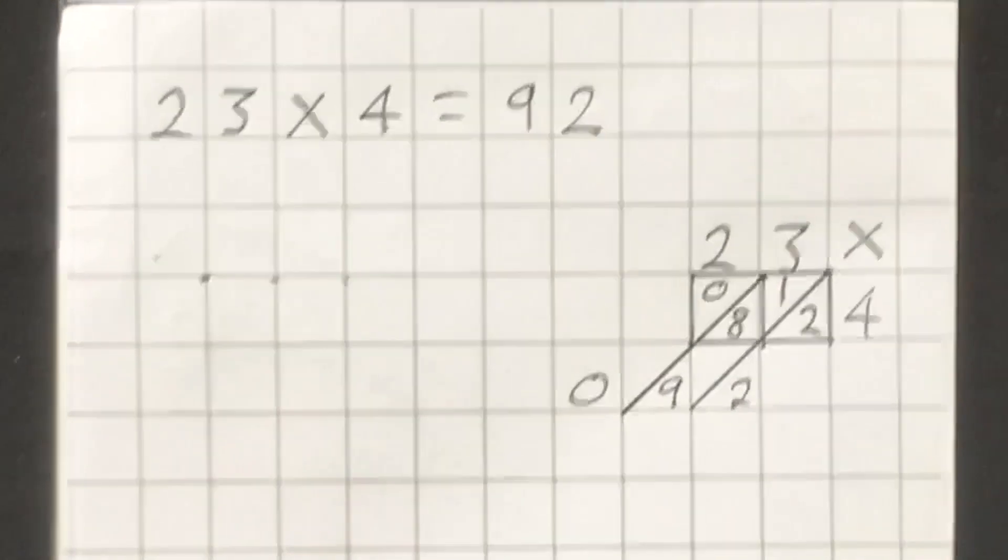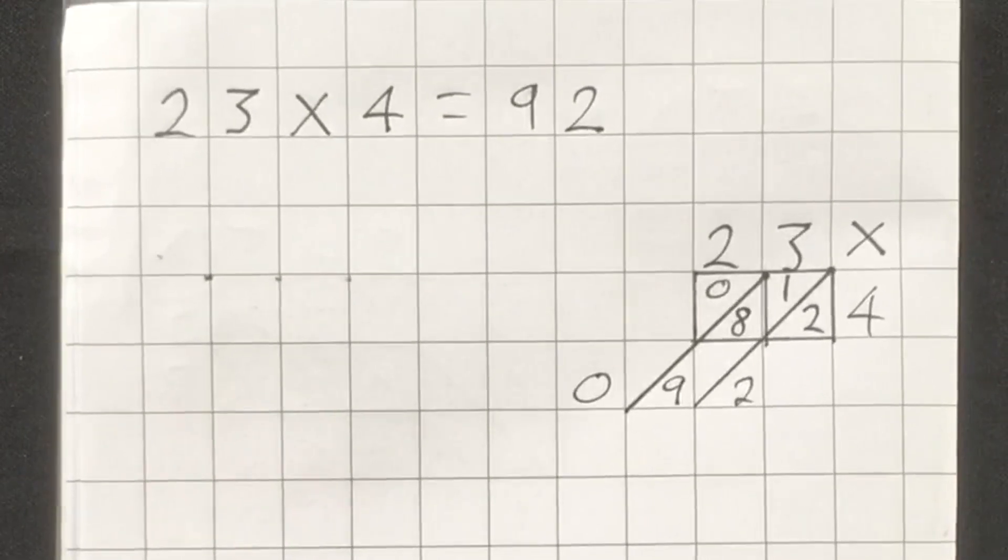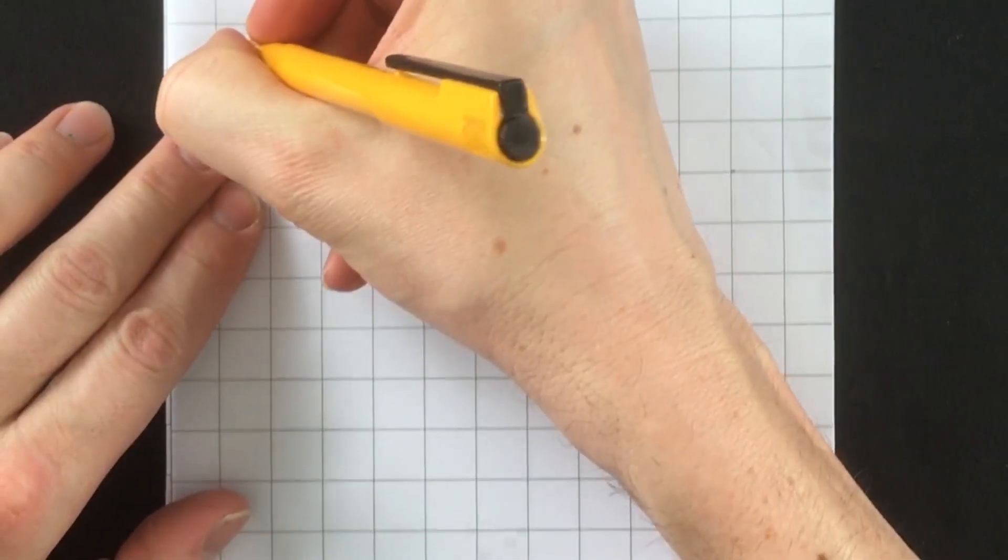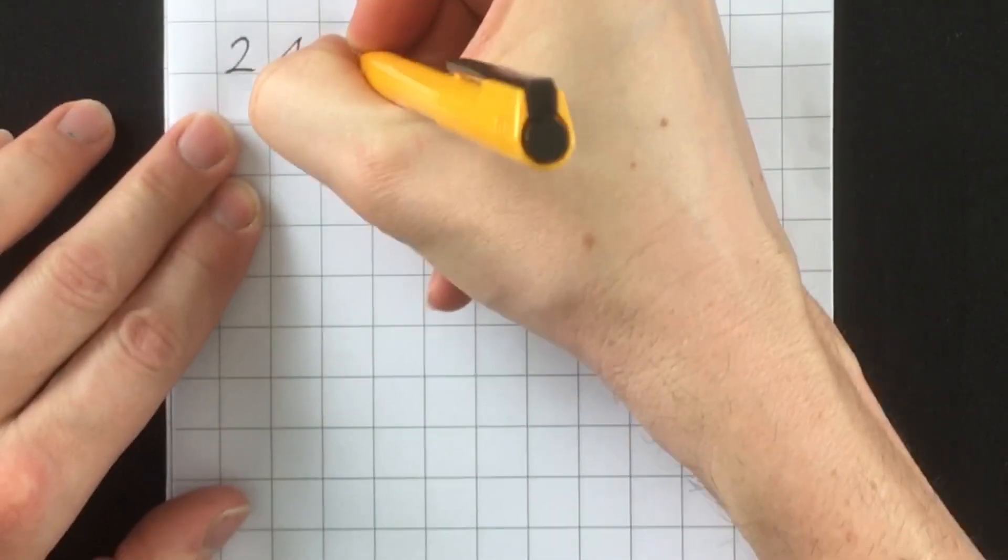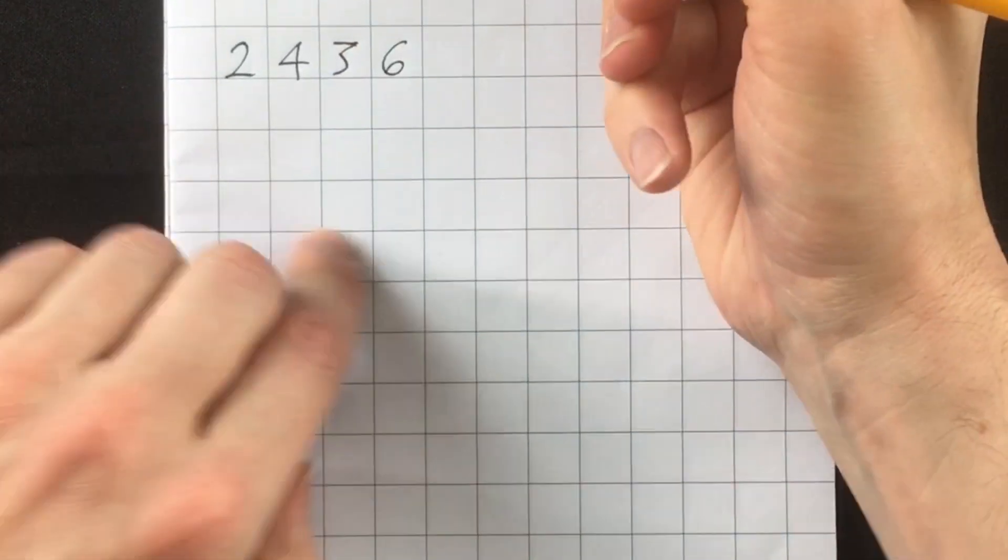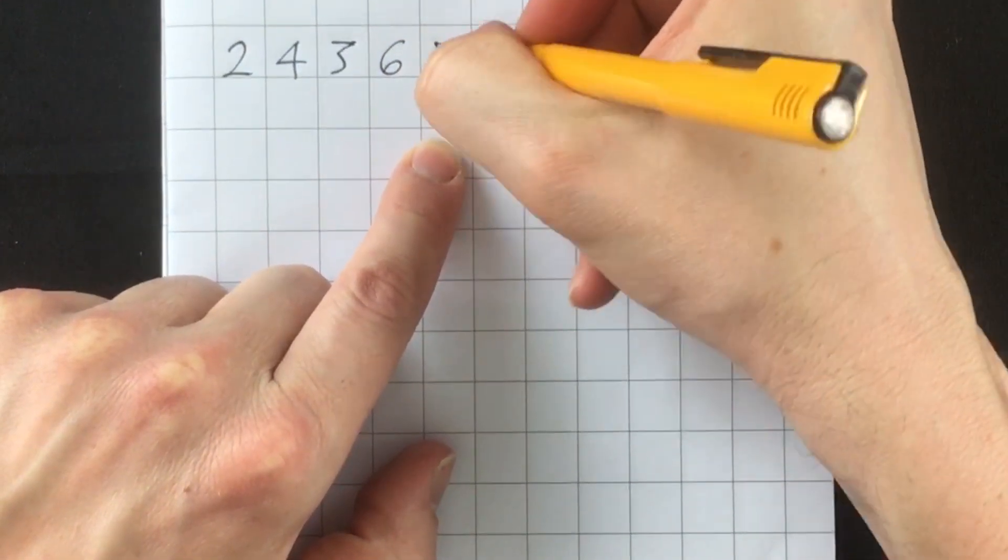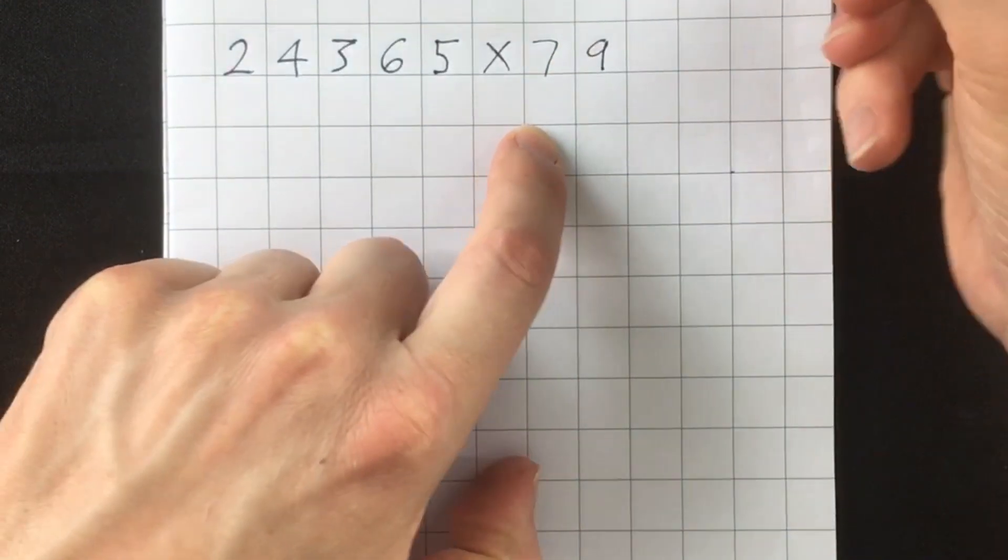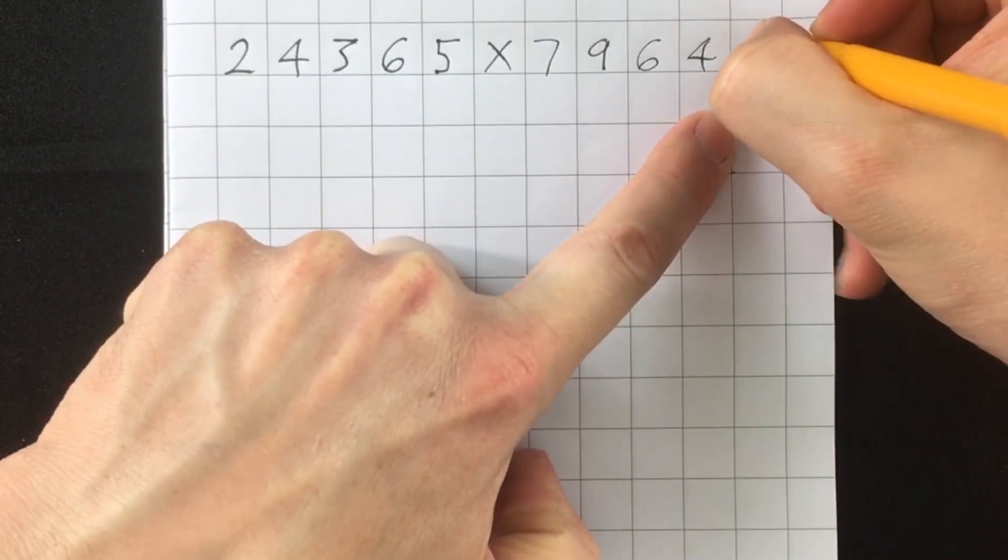So if you're new to this method, you might want to try a slightly smaller calculation like this. Although you're about to find out that the really, really big calculations are not that much harder. Let's try a massive calculation and see how we get on: two, four, three, six, five, times seven, nine, six, four, one.